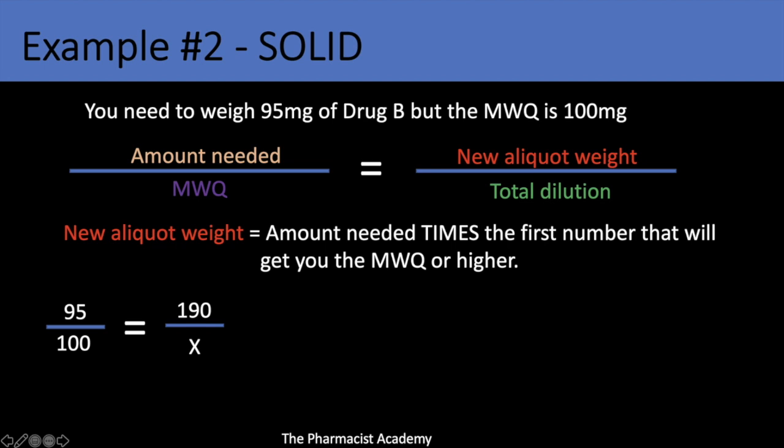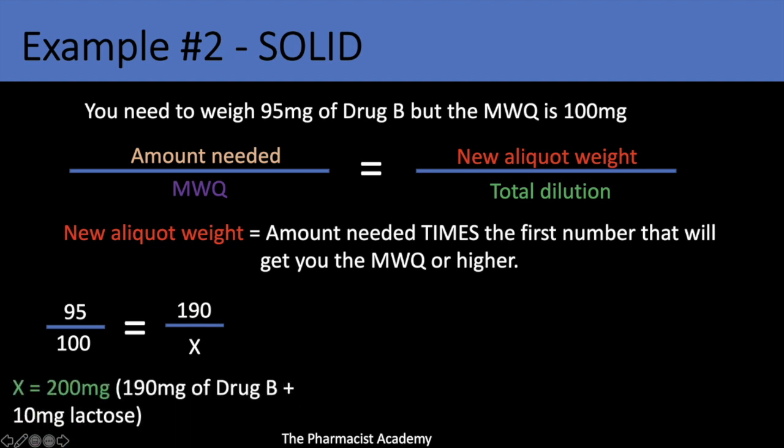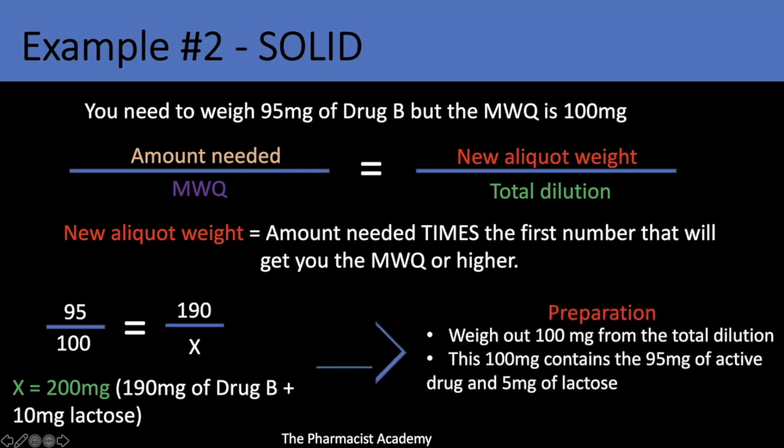You have 95 over 100 equals 190 over x. I got 190 because I used a multiplier of 2, so 95 times 2 is 190. We will create a dilution that contains 190 milligrams of drug B plus 10 milligrams of lactose. For preparation, weigh out the minimum weighable quantity — in this case 100 milligrams — and that 100 milligrams is 95 milligrams of active ingredient and 5 milligrams of lactose. The same multiplier applies to the denominator: 100 times 2 is 200 milligrams. Multiply top and bottom to get the numbers on the right, keeping the ratio and concentration the same. You simply made a larger dilution, took out the MWQ, and in the MWQ you have the active ingredient needed plus some inactive product.